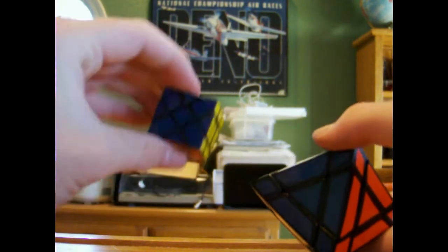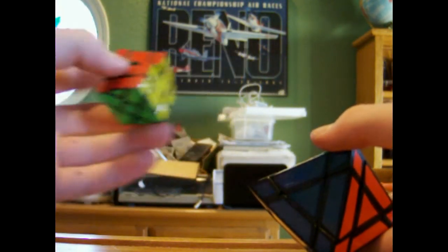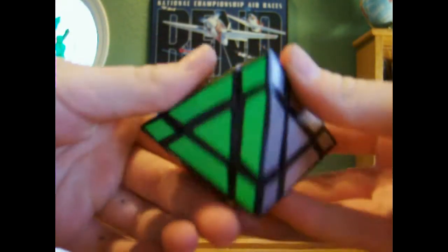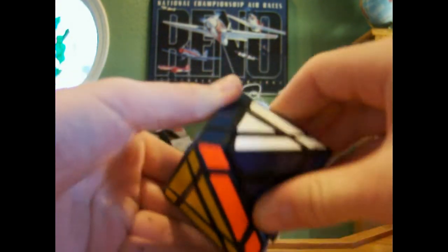Mini Fisher Cube, stickered, painted, turning good, everything. And Tragerber's Octahedron, stickered, painted, and I will work on turning a little bit so it'll turn really good.